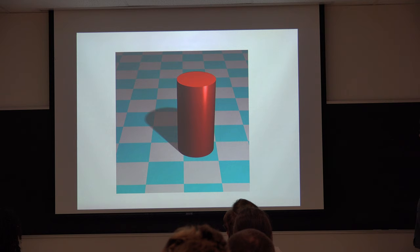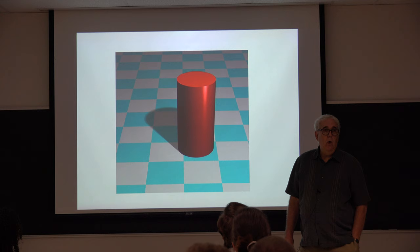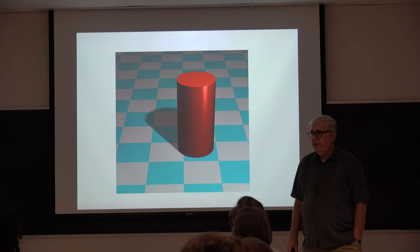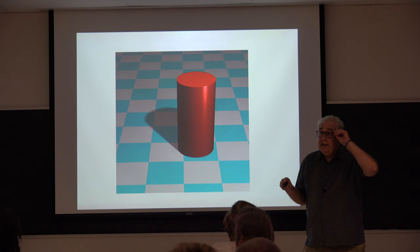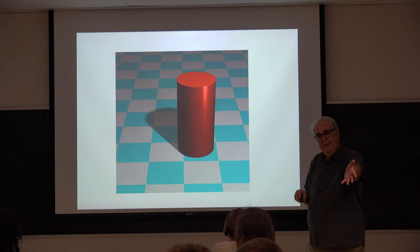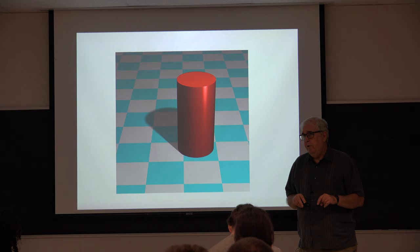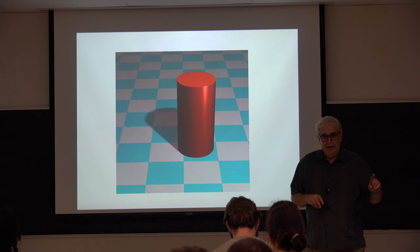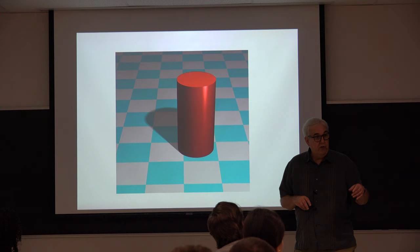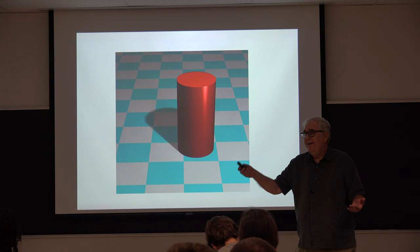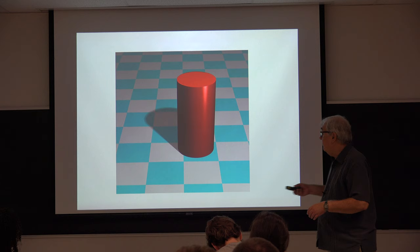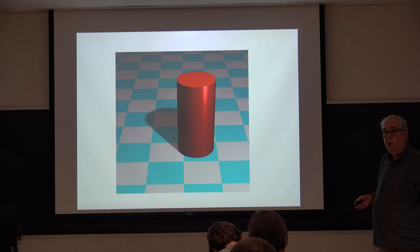The first thing I want to do today is talk about different ways that contours can arise in images. This will be an important theme throughout the course, because we have different models of how you compute various aspects of visual information — and almost all of them work on some types of contours but not others. So the first thing is to talk about the different kinds of contours that can exist. We'll come back to this when we start doing other models like stereo and motion.